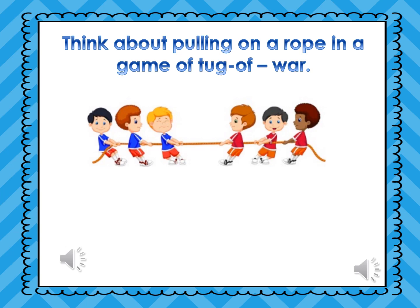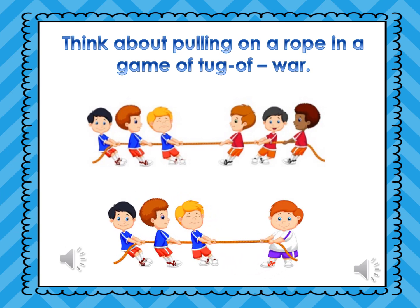Think about pulling on a rope in a game of tug of war. Your team's pull is a force in one direction, and the pull of the other team is a force in the opposite direction. If the forces are equal, as in the first picture, the rope does not move. But what if even more people join the other team? Their pull combines to move the rope in their direction. The rope will move in the direction of the stronger force.